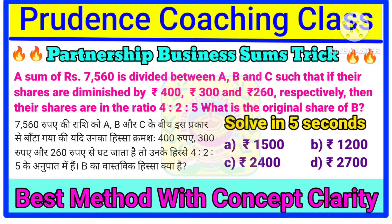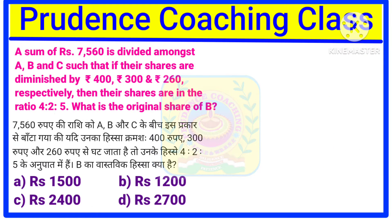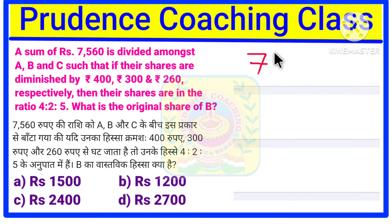Let us learn the easiest way to solve this particular question so that you can solve it within a few seconds and save time for the rest of the questions. A sum of rupees 7560 is divided between A, B, and C such that if their shares are diminished by rupees 400, rupees 300, and rupees 260 respectively, then their shares are in the ratio 4:2:5. What is the original share of B?